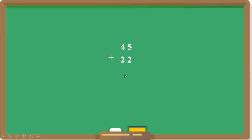Place value is the value of a digit according to its placement in the number. In this example, the 5 and the 2 are both at the 1's place, so while writing, they should come below each other — below 5 we write 2. And the 4 and 2 are at the 10's place.